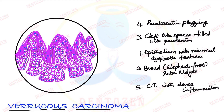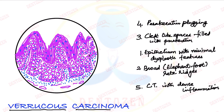In the connective tissue we have to show inflammatory cells — dense inflammation in the connective tissue. We can also draw some collagen fibers, blood vessels, and some red blood cells.